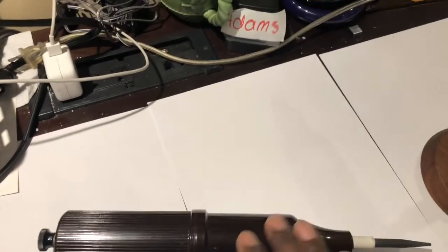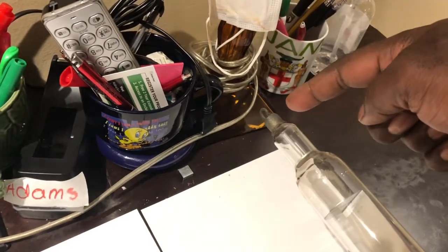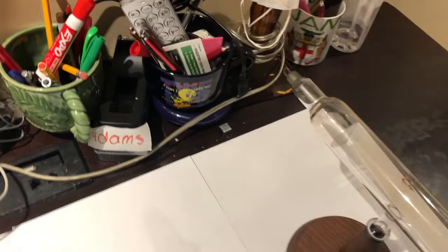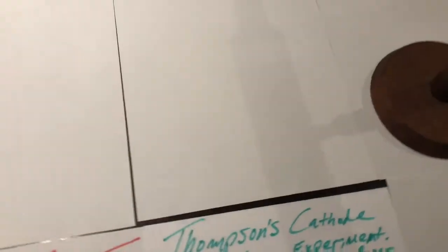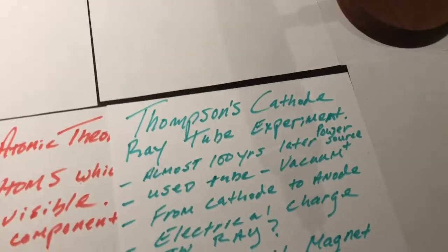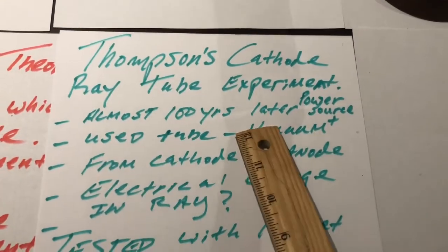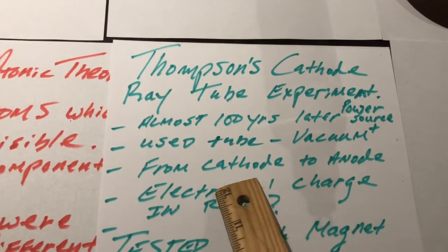We're going to apply the energy, the electricity to the cathode over here, and we're going to observe what happens. So, we're going to go through some more of what Thompson did in this particular experiment. So, he used the tube, as we said before, as a vacuum, so most of the air is taken out, as we said before.